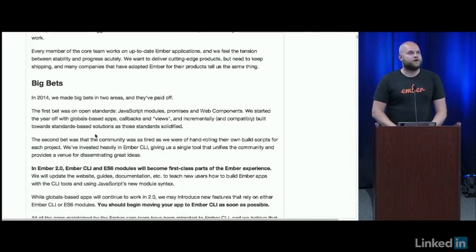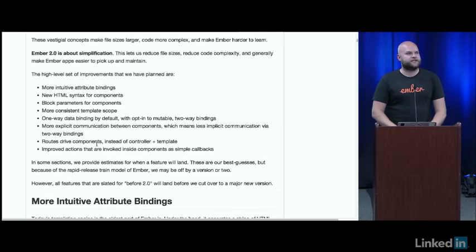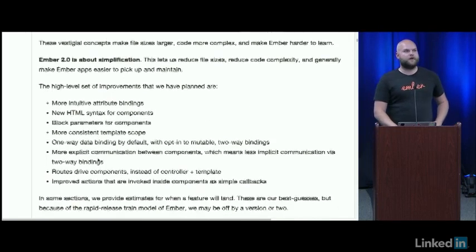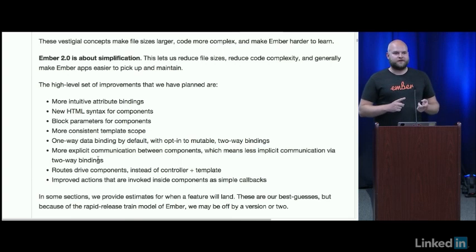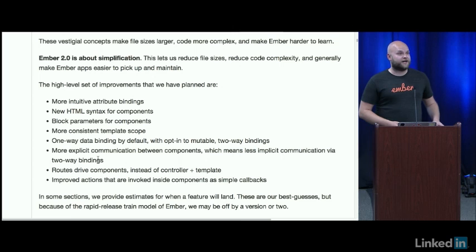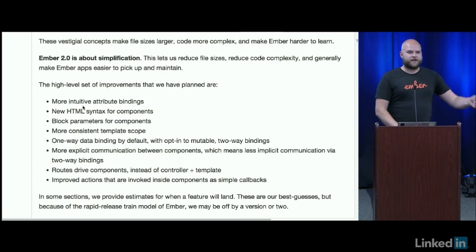There's a pretty decent list here of high-level improvements we're shooting for. The first one was more intuitive attribute bindings — we did it, it shipped in 1.11. That's a 2.0 feature you're already using today.